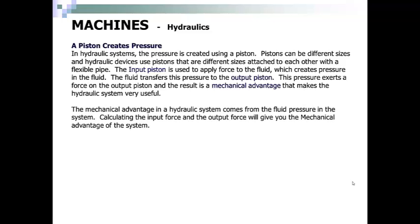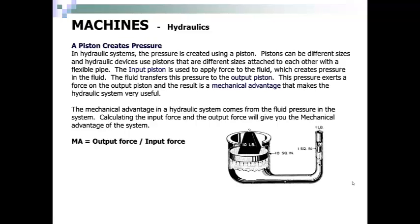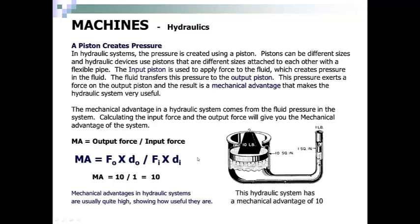The mechanical advantage of a hydraulic system comes from the fluid pressure in the system. Calculating the input force and output force will give you the mechanical advantage of the system. Mechanical advantage is equal to output force divided by input force. So here you have an output force of 10 pounds and an input force of 1 pound. Therefore, this machine has a mechanical advantage of 10. Mechanical advantages in hydraulic systems are usually quite high, showing how useful they are. This hydraulic system has a mechanical advantage of 10.